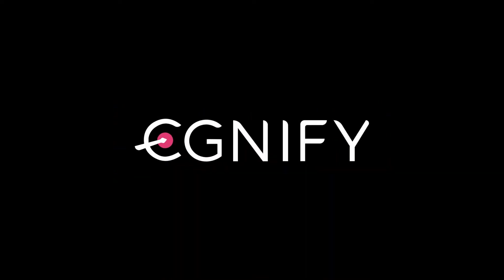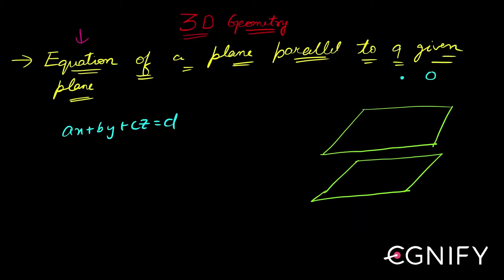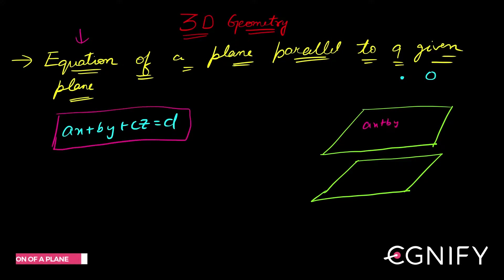Let us now see the final subtopic of the equations of plane section — the equation of a plane parallel to a given plane. If the given plane is ax + by + cz = d, how do I find the equation of a plane parallel to it? Remember, a, b, c are the direction ratios (DRs) of the normal to the plane.